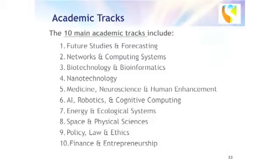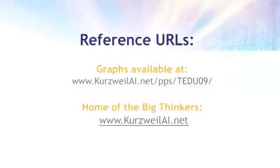The first six tracks — artificial intelligence, advanced computing technologies, biotechnology, nanotechnology — are the core areas of information technology. Then we're going to apply them to other areas like energy, ecology, policy, law and ethics, and entrepreneurship, so that people can bring these new technologies to the world. We're very appreciative of the support we've gotten from the intellectual and high-tech leaders, particularly Google and NASA. This is an exciting new venture, and we invite you to participate. Thank you very much.